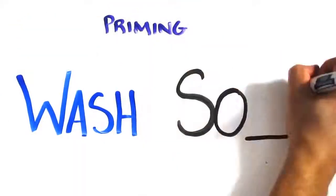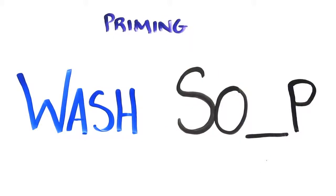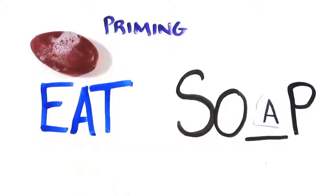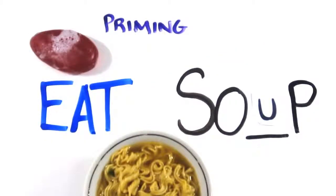For example, if I said wash, how would you complete this word fragment? Most would see soap, but had I just shown you the word eat, you'd be more likely to see soup. In this way, both eat and wash prime your thoughts.